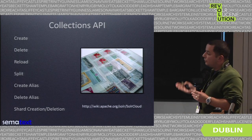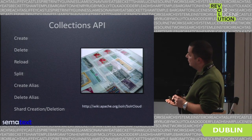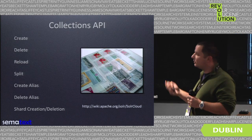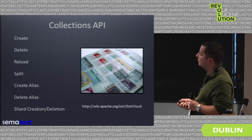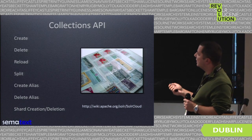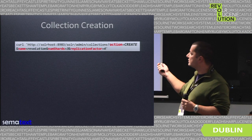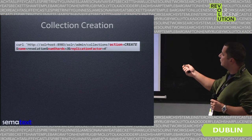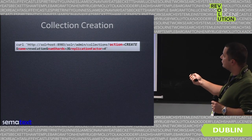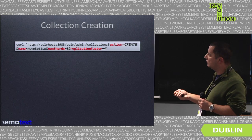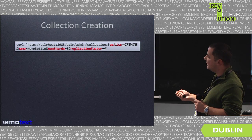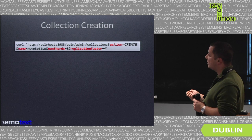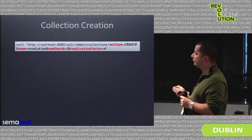How to create a collection. First, we need to have the configuration uploaded — we did that already. Now we run a command to the admin collections handler and say we want action create. We give it a name — it's called 'revolution' — we want it to have three shards and a replication factor of four.